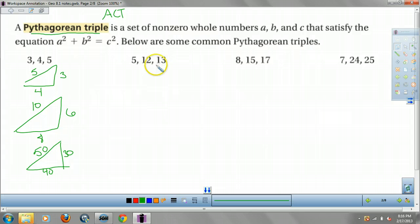5, 12, 13 is another big one. Again, if I said this was 26 and this was 24, then this would actually be 10. All these times 2.